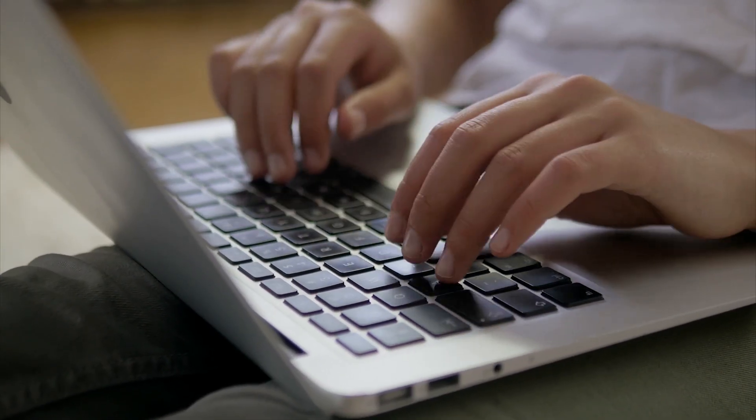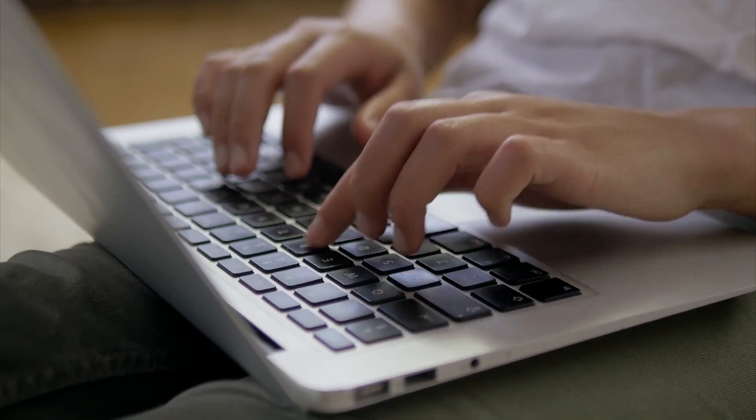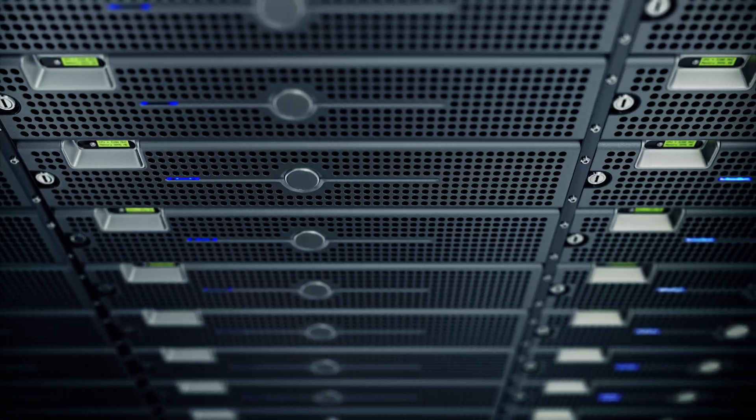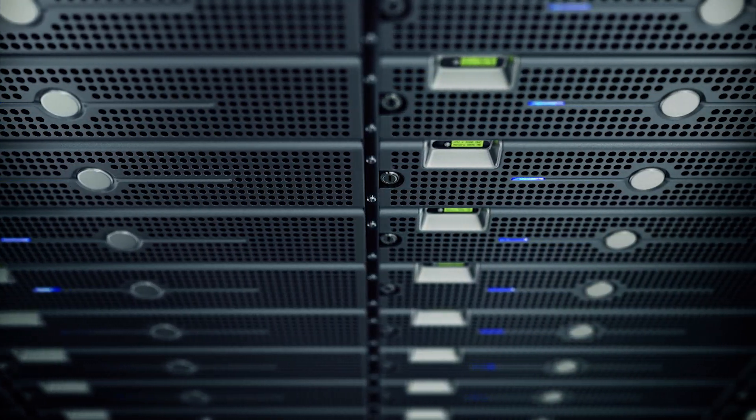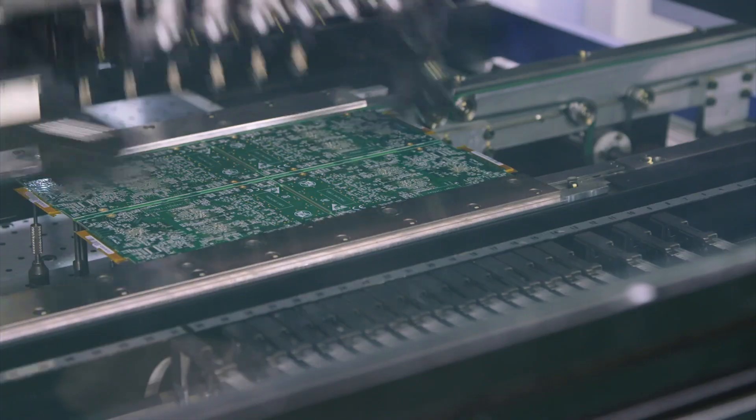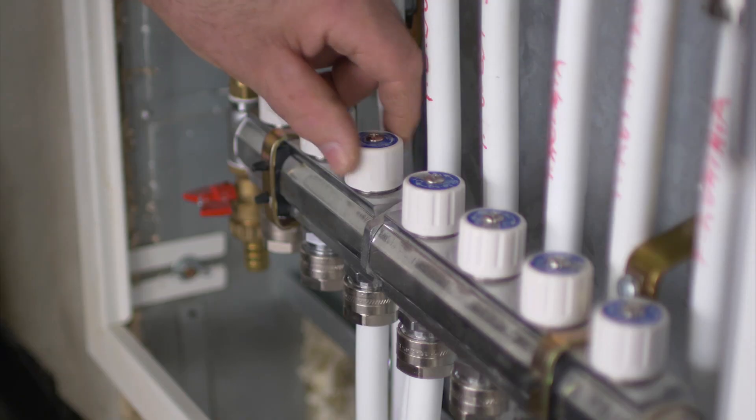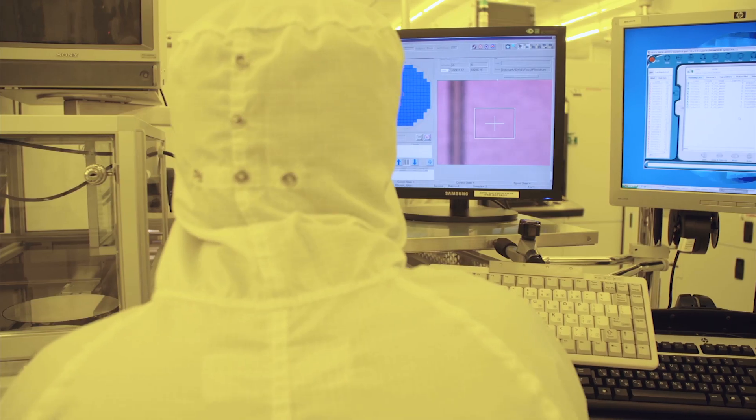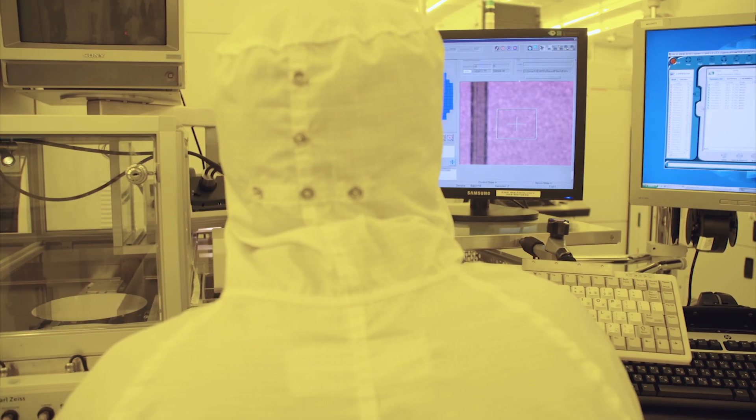If you ask someone to explain how a computer works from the ground up, their answer will probably start something along the lines of: a computer is a device that can do math and it's based around transistors. To understand transistors, imagine a tiny water valve that you can turn on and off. If you chain these valves together in the right way, you can make logic gates, and then from there you can do computation.